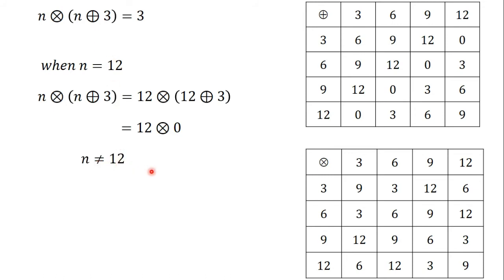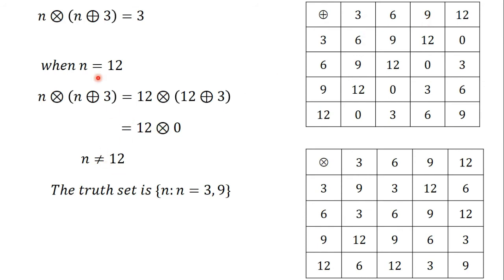From our calculations, the two numbers that satisfy the equation n times (n plus 3) equals 3 are 3 and 9. The question asked us to find the truth set of this equation. The truth set is written in a curly bracket: the truth set is {3, 9}.